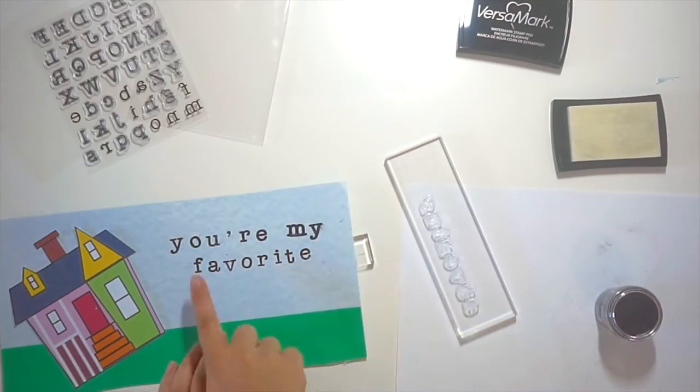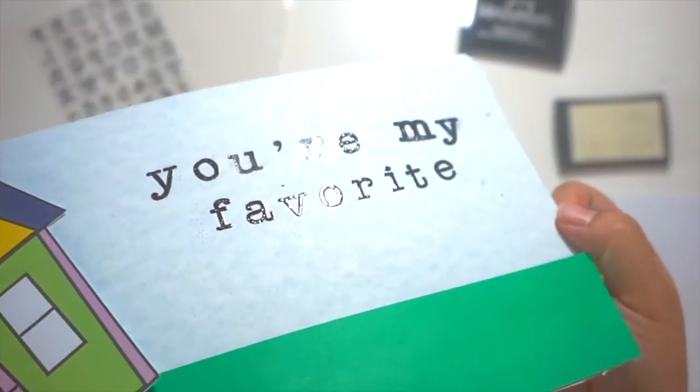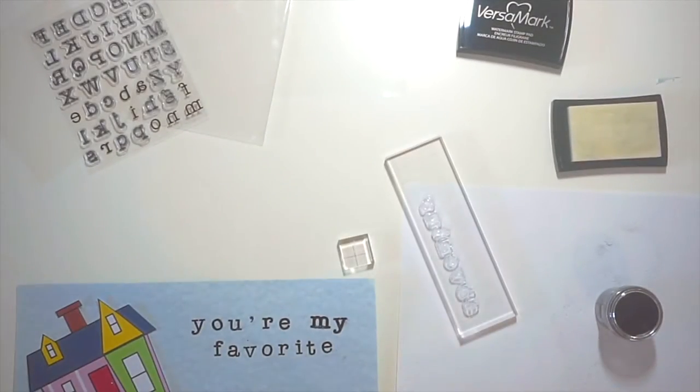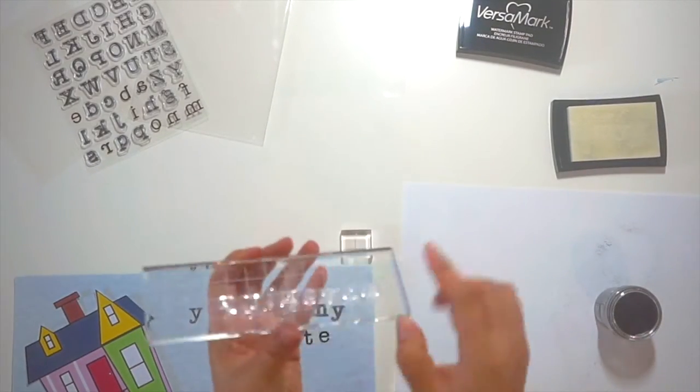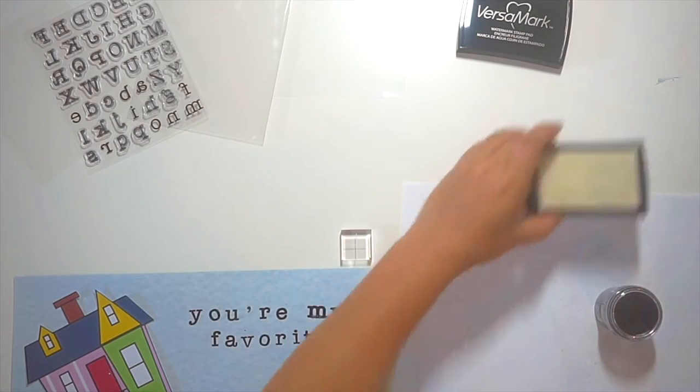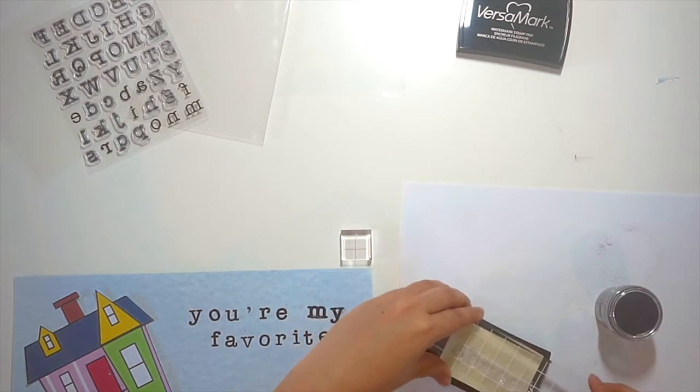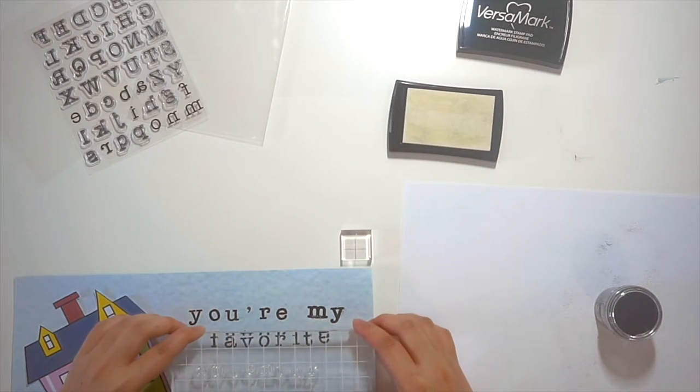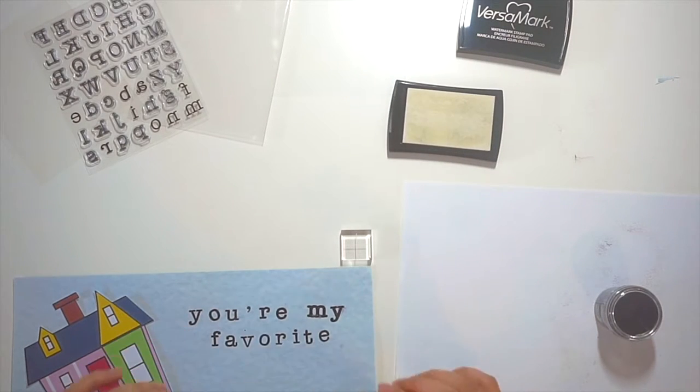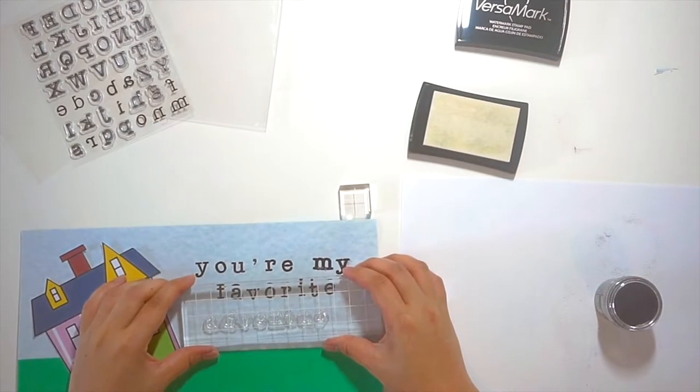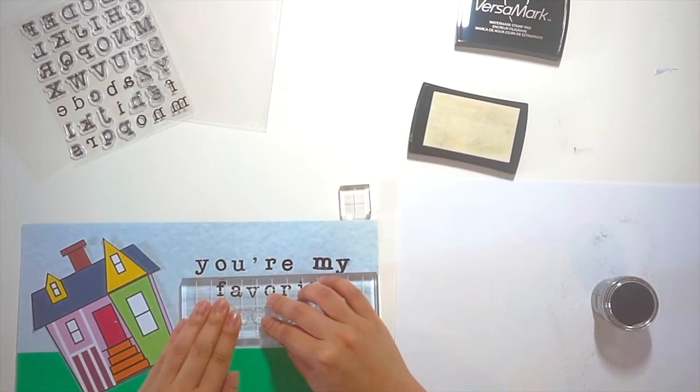I've already stamped the first part of the sentiment right there, and as you can see, the embossing added some really nice sheen there. I'm going to put the stamps on my acrylic block, add some Versamark ink on that, and then stamp the last part of the sentiment on there. Embossing is one of my favorite techniques to use just because it adds a nice subtle dimension to it that you just don't get with regular printing.